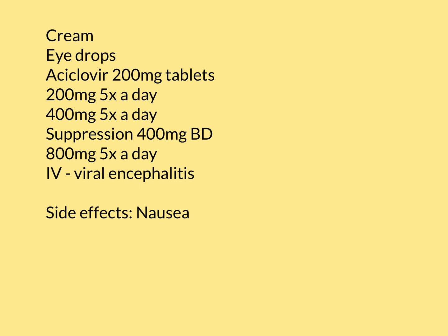To summarise: acyclovir is an extremely well-tolerated antiviral drug used to treat infections from HSV-1, HSV-2, and VZV. Infections with these viruses often self-resolve, but treatment can make them resolve quicker and, in the case of shingles, can prevent post-herpetic neuralgia. For really severe infections — such as extensive skin infections, herpetic encephalitis, or herpetic keratitis — treatment with acyclovir can be very helpful and crucial in bringing the infection under control.